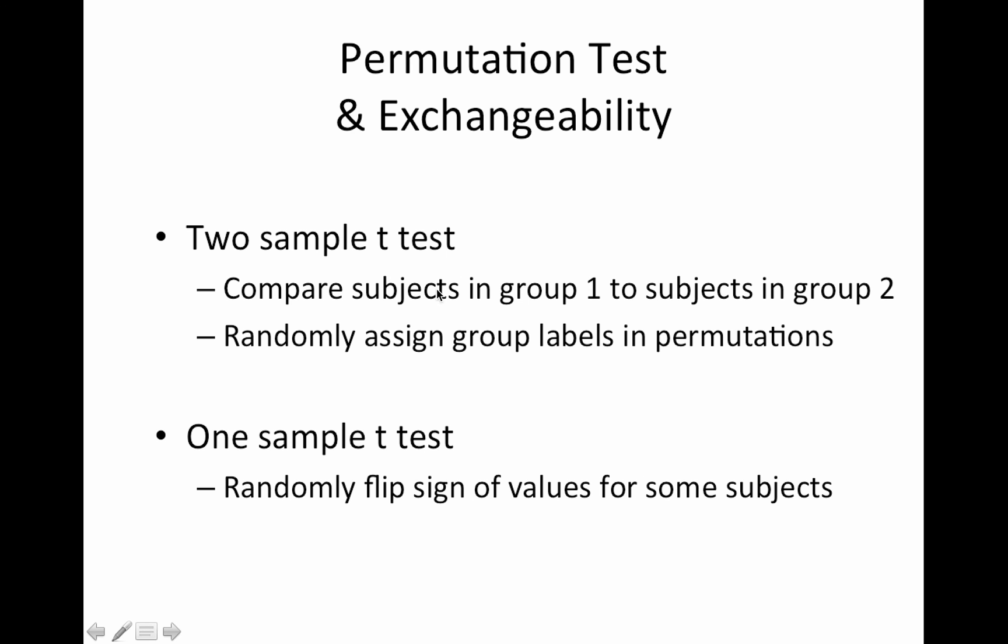For two sample t-tests, how do you do the shuffling? So if you have two groups, group one and group two, you would shuffle the group labels, just as we did in the example I showed earlier, shuffling the block labels. With a one sample t-test, you would just randomly flip the sign of the values for some subjects. So this is assuming you've already computed a within-subject difference. So let's say you have time two minus time one. You're looking for a within-subject brain activation change over two sessions. So you would randomly permute by multiplying that difference by a negative one. So that's equivalent to randomly switching some subjects from time two minus time one to time one minus time two.